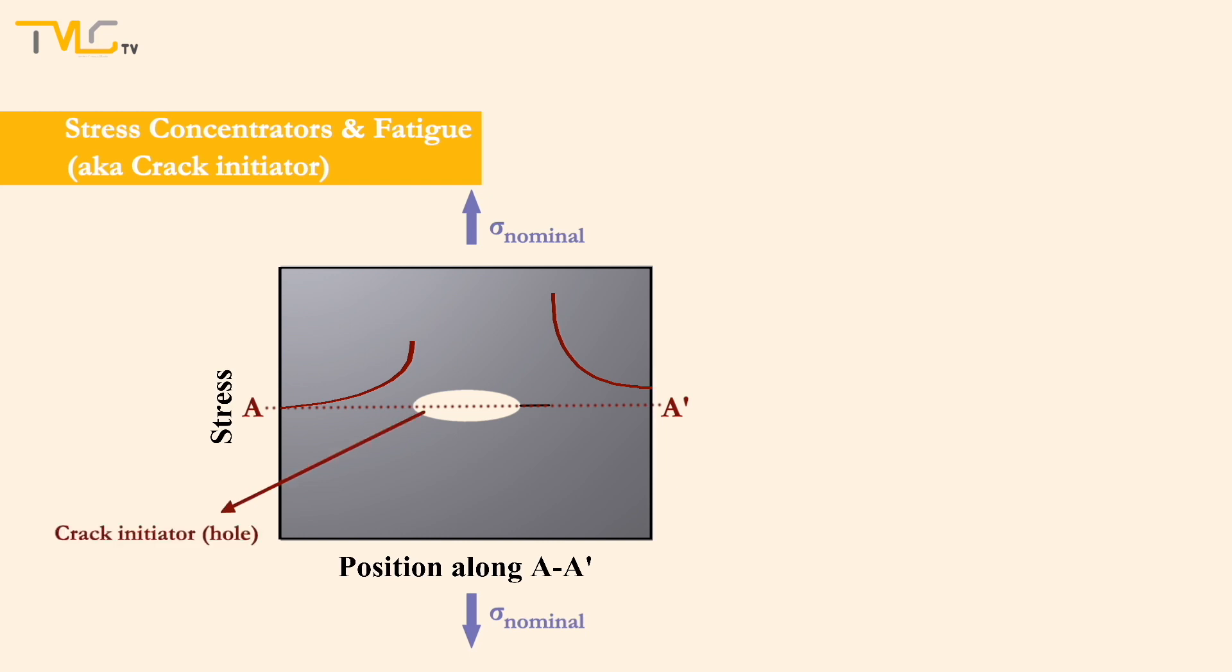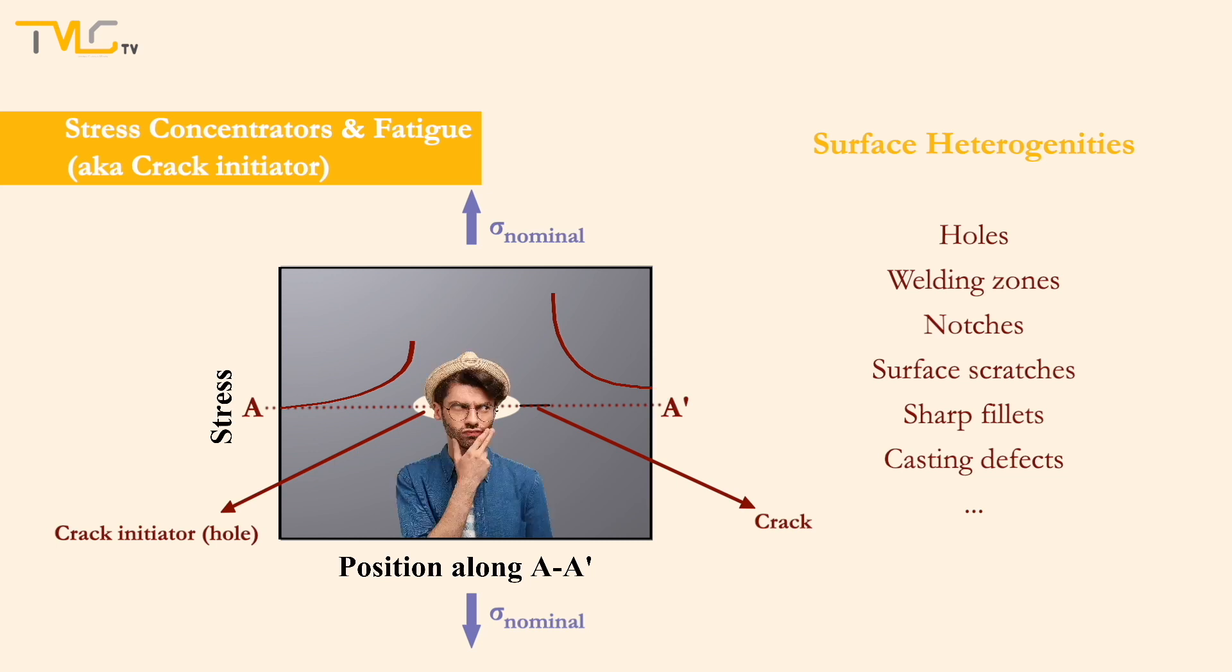You may recall the crack stress amplification relation from video number 2.2. A wide variety of surface heterogenities can act as stress concentrators. Such heterogenities are significantly important for the detection of potential stress concentration points and for monitoring the crack initiation and later propagation.